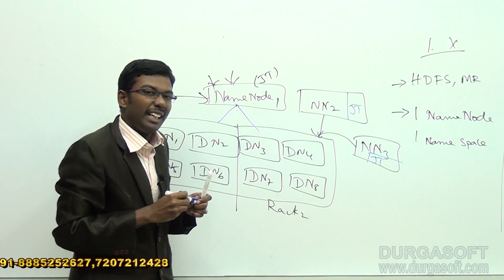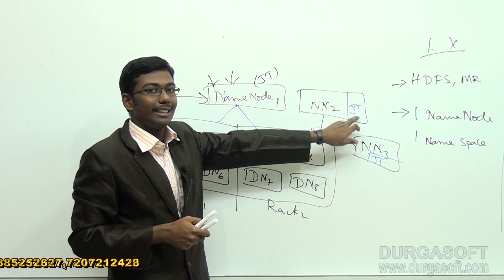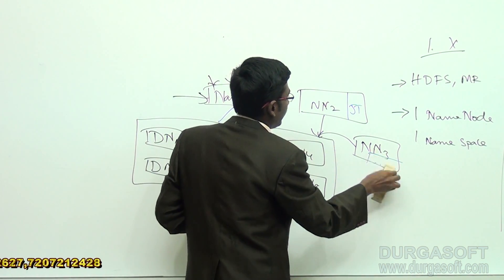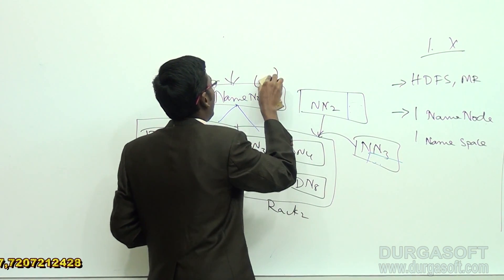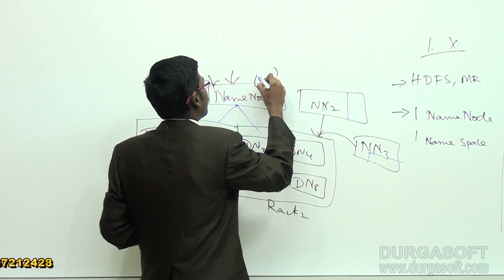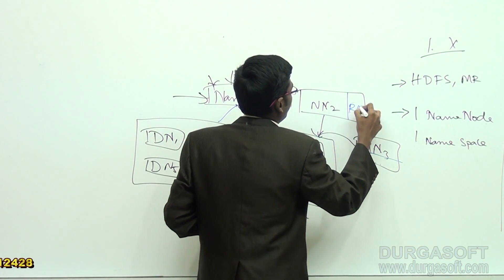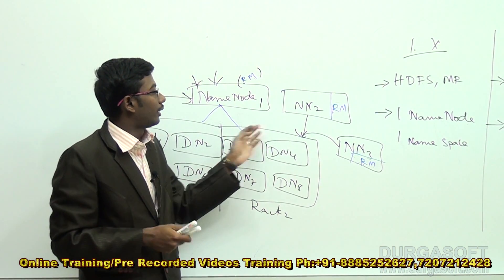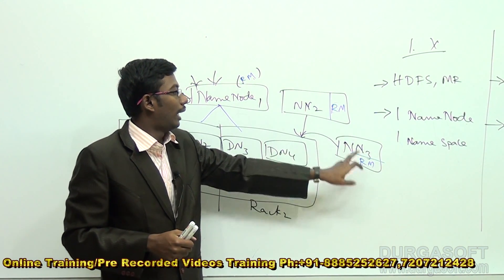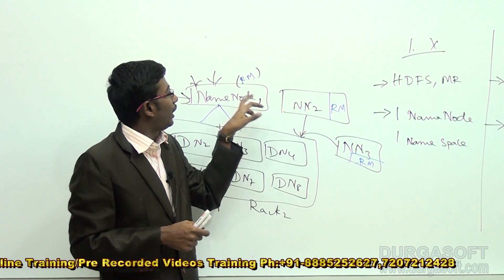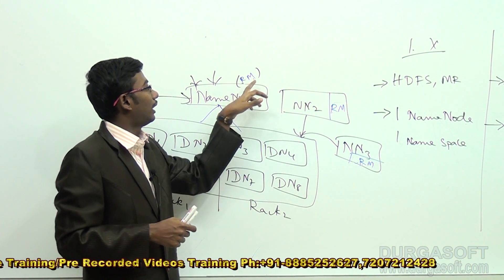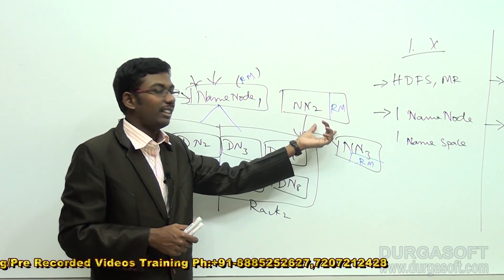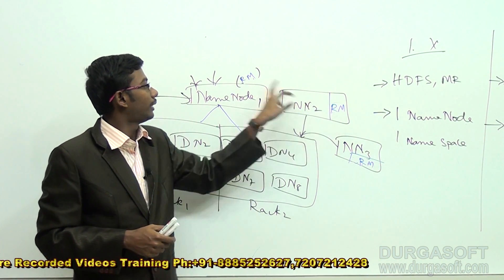In 2.x, for processing components we cannot call them job trackers - we have to call them resource managers. In 1.x we have job trackers and task trackers; in 2.x we have resource managers and node managers. By maintaining multiple resource managers, we can easily achieve higher performances with less burden to the processing components.